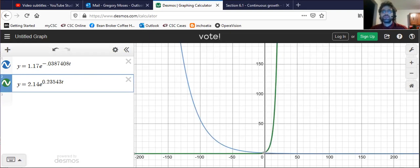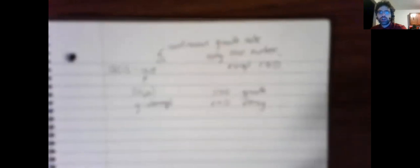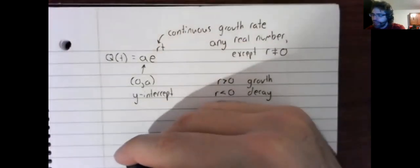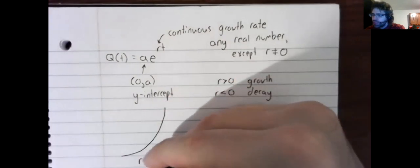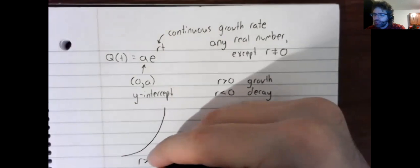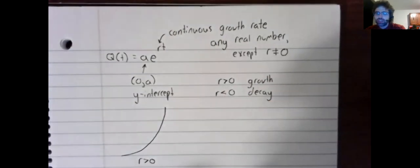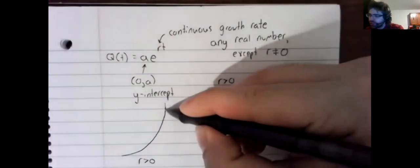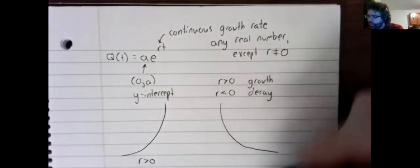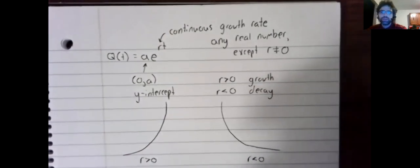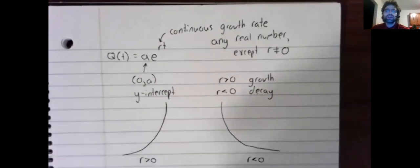So the sign of the r is the determination of what the graph looks like. If r is greater than zero, it's going to look like that. If r is less than zero, it's going to look like this.